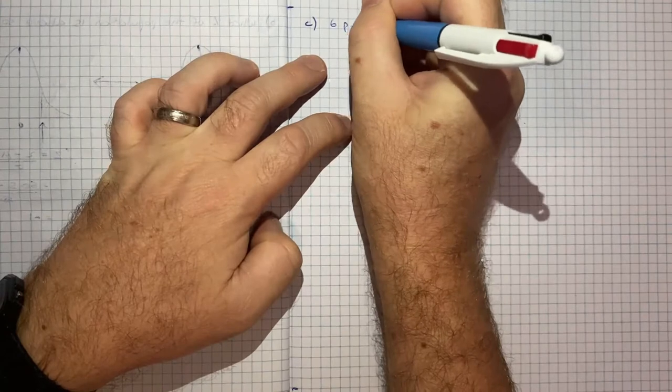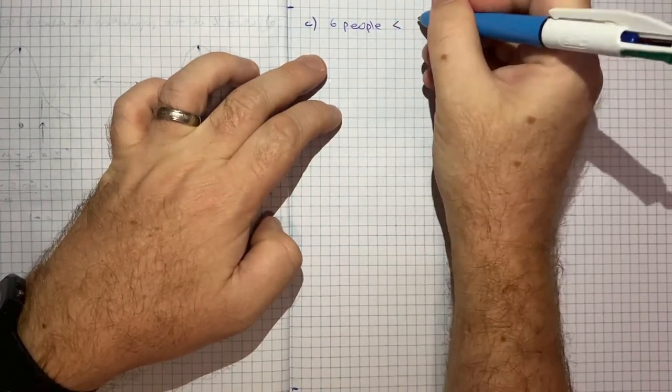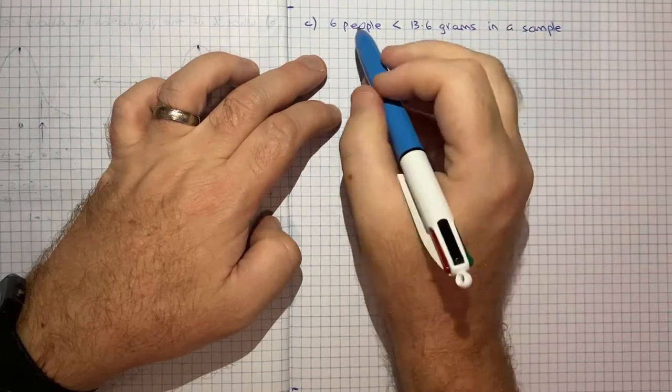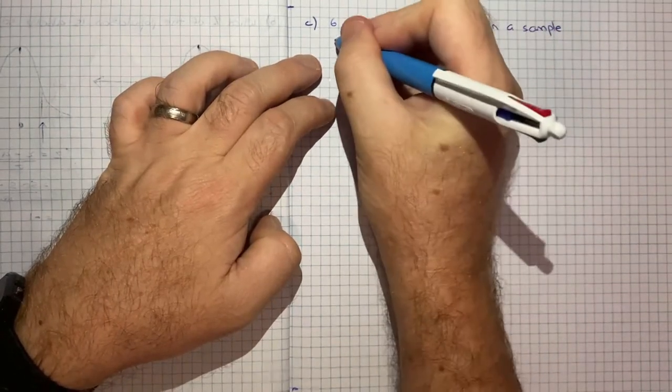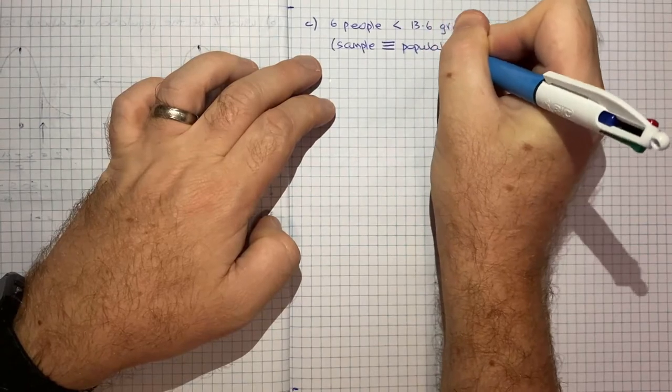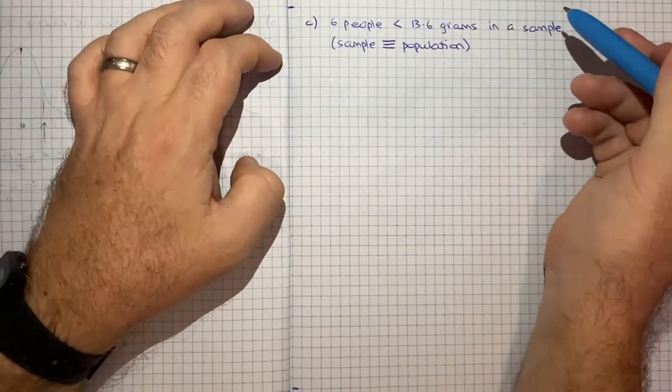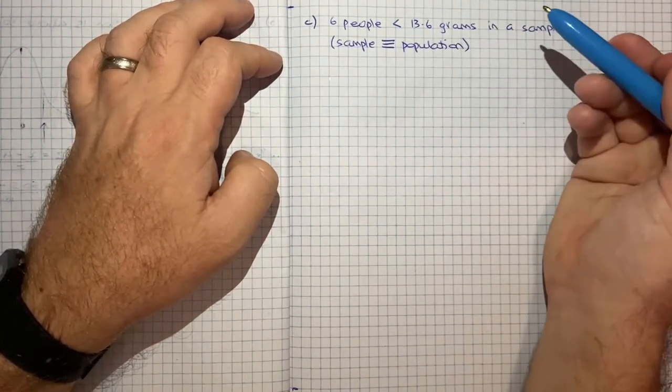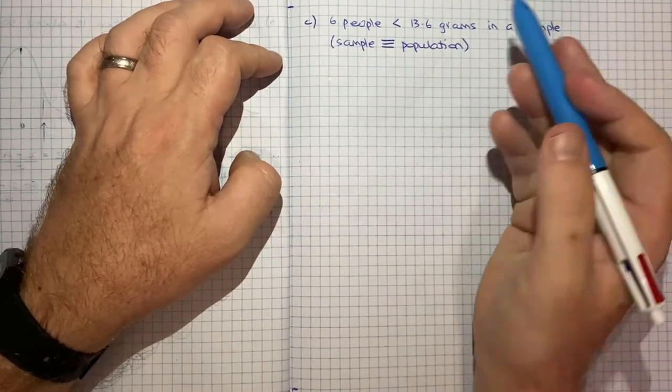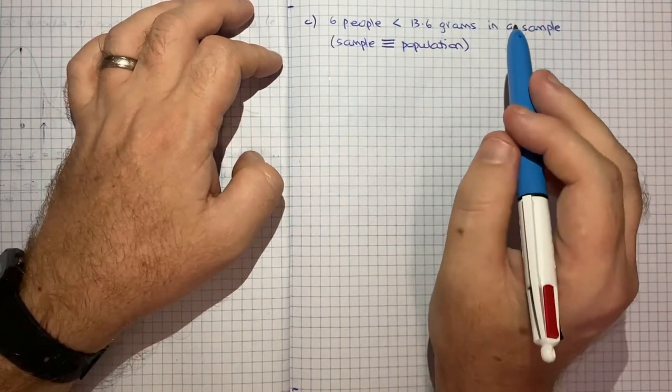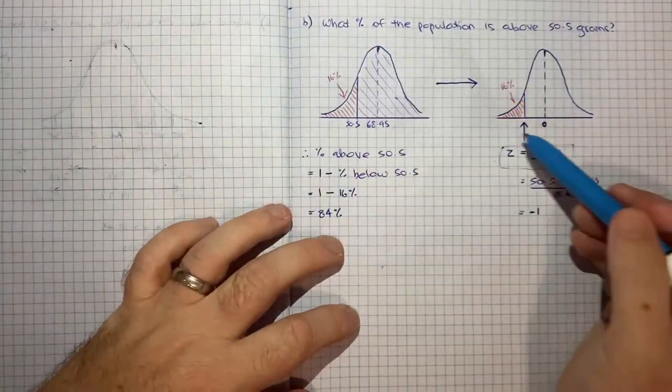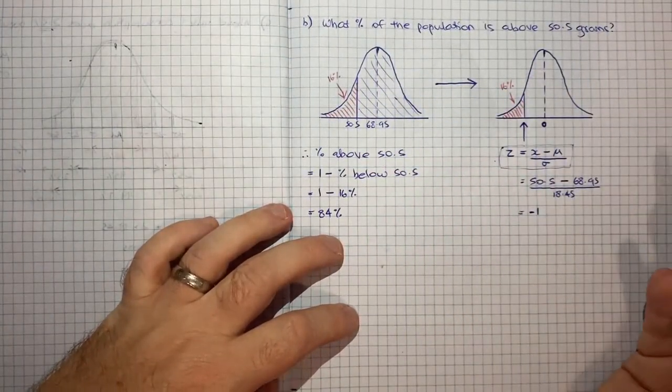So for part C, we were told that six people consumed less than 13.6 grams in a sample. So we had a sample of people, six of them consumed less than 13.6 grams. We're also told that the sample follows the same distribution as the population. Now often you'll see wording like the sample is a representative sample, so you've randomly selected and there's been no bias and that kind of thing. That's what initially jumped out to me when I read that statement in the question. But actually the statement is saying something slightly different. What it's really saying is that the sample and the population, they follow the same distribution, which means the percentages below certain cutoffs will be the same.